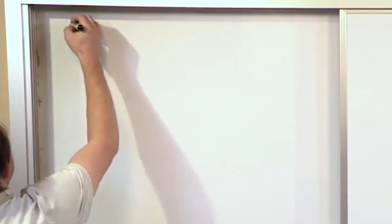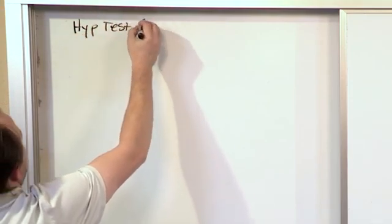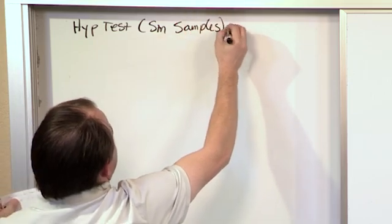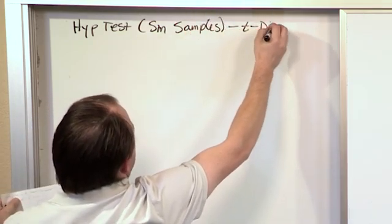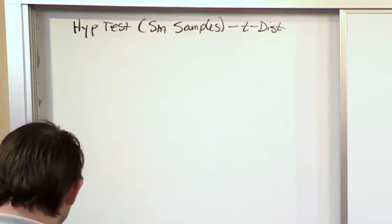Now remember that because we are doing hypothesis testing, hypothesis testing for small samples, we use the t distribution. And when I say small samples, I mean less than 30 samples.